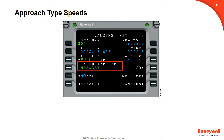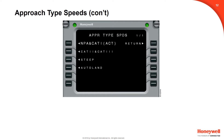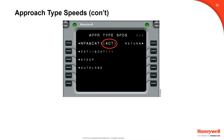The approach type speeds are displayed on line 4 left. Selecting the OR prompt at 4 right displays the Approach Type Speeds page that permits selection of various approach speeds. The approach type speed selections include non-precision approach, Cat 1, Cat 2, Cat 3, Steep Approach, and Autoland. The currently active approach speed is displayed in large font with ACT for active in parentheses after the speed. Select the return prompt to go back to the landing init page.